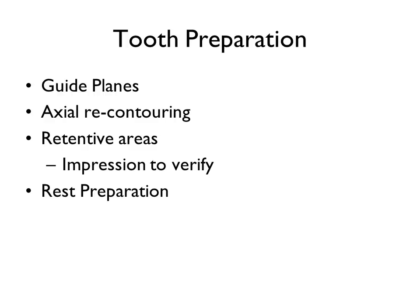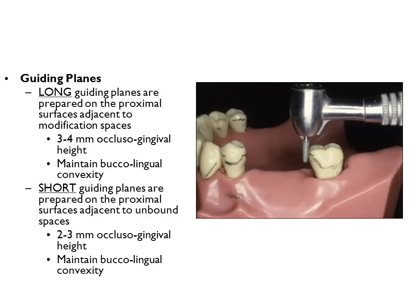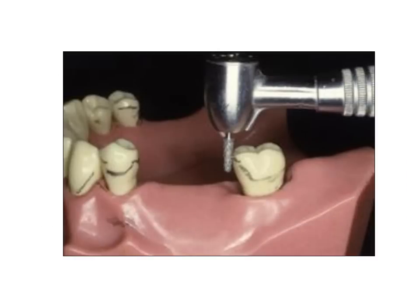If such a preparation may be verified on the stone cast, then the preparation may proceed in the mouth. Recall the preparation designs for guiding planes and rest seats. Axial walls, particularly on the distal of premolars and the mesial of molars, should be adjusted to allow correct placement of circumferential clasps. The following slides describe preparations for rest seats and guiding planes commonly used. It is a good idea, particularly for the novice, to prepare these on a stone cast with a surveyor cutting tool.